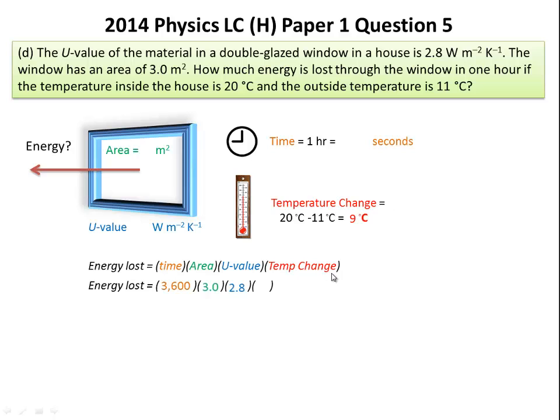The temperature change, again, we can just put it straight in there, degrees, it's fine. And that's it. And you just multiply all these together, and you should find the answer is 272,160 joules, don't forget your joules.